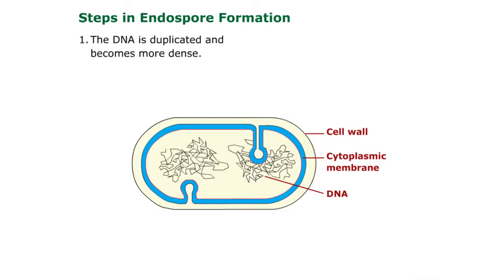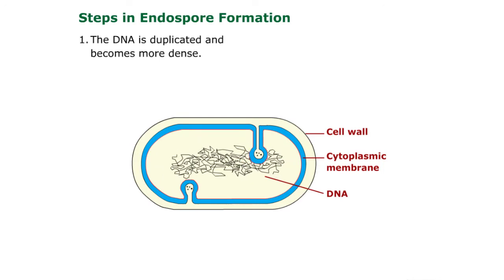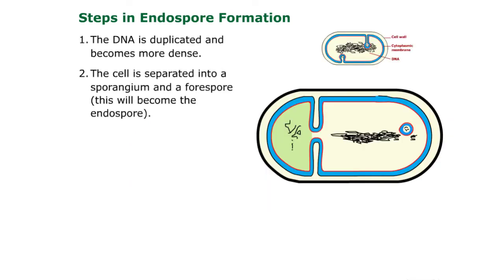Steps in endospore formation. Number one, the DNA is duplicated and becomes more dense. Number two, the cell is separated into a sporangium and a forespore. This will become the endospore.